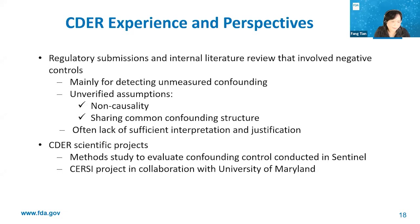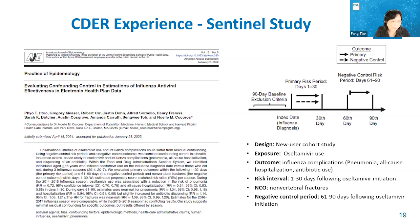In CDER, we have gained some experience with negative control methods from regulatory submissions and literature review. CDER also has a few scientific projects related to negative control methods. One study was from CDER and the Sentinel Collaboration Project to evaluate the treatment effect of an antiviral drug in claims data. The study outcome was influenza complications within the first 30 days after the index date. The study applied the propensity score method to control for unmeasured confounders and two negative control analyses to evaluate the unmeasured confounders—fractures as a negative control outcome, and a negative control time period during which there was no expected biological treatment effect on influenza complications.